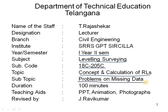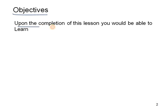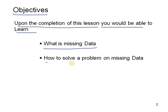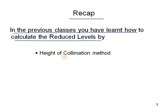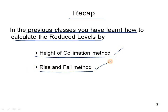Today we are going to see the problems on missing data. These problems are very important and useful when you are surveying and doing level calculations. Upon completion of this lesson, you would be able to know what is missing data and how to solve a problem on missing data. In the previous class, you learned how to calculate reduced levels by the Height of Instrument Method and Rise and Fall Method.